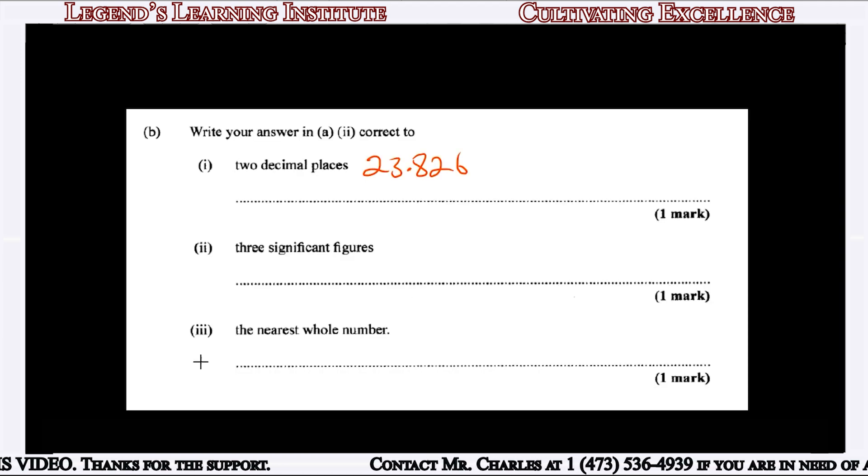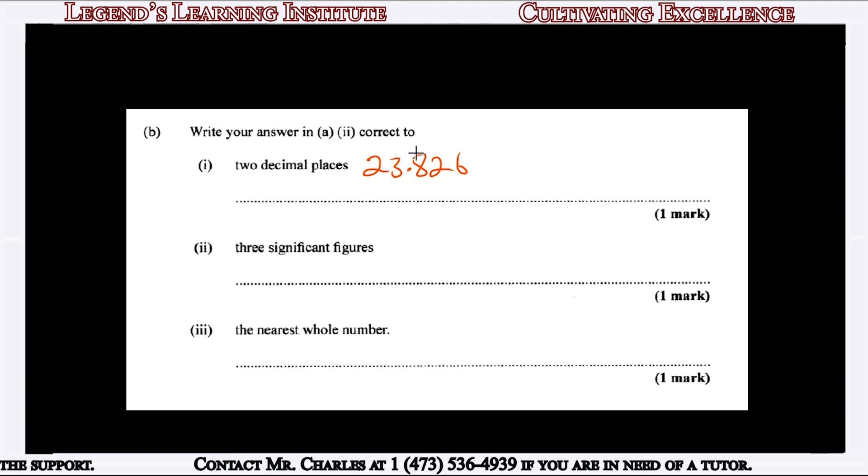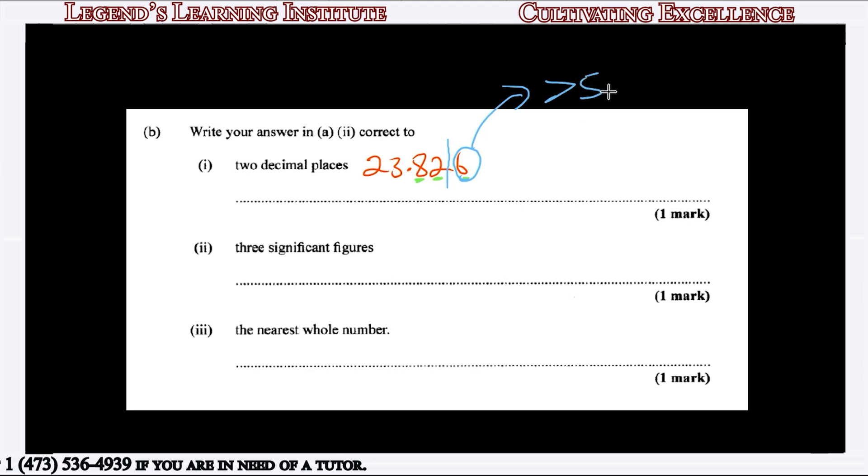1B says write your answer in A(ii), which was 23.826, correct to two decimal places. Counting the decimal places: first is 8, second is 2, third is 6. We put a line between the second and third. Since 6 is greater than 5, we add 1 to the 2, giving us 23.83.